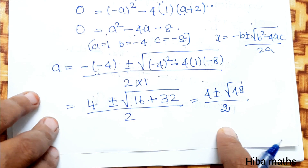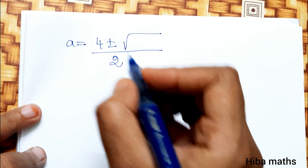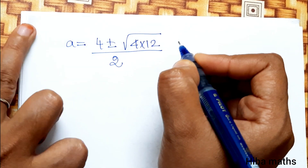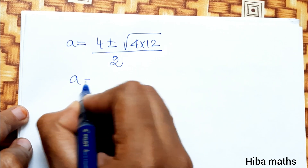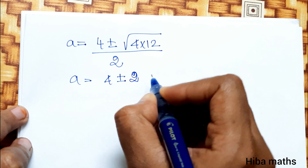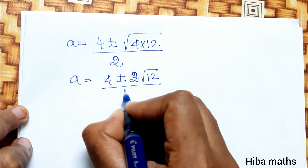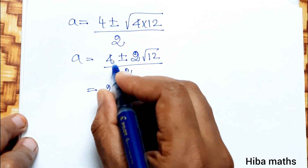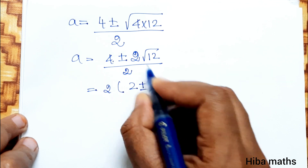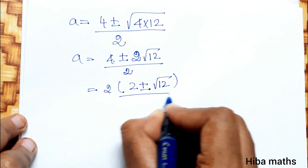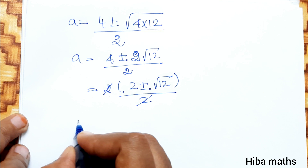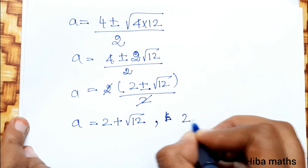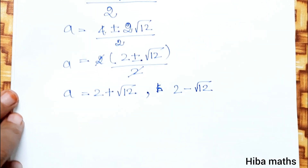Now, 48 is split: 48 equals 4 times 12. So the next step is 4 plus or minus root of 4 times 12, which simplifies to 4 plus or minus 2 root of 12.